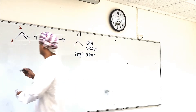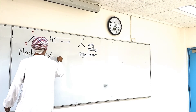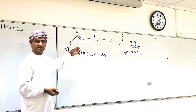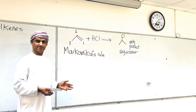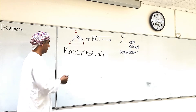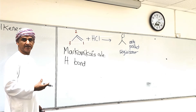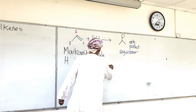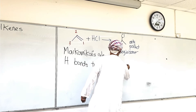Markovnikov's rule states that in the electrophilic addition reactions of alkenes with HX, H of HX bonds to carbon with more hydrogens or less alkyl substituents, and X of HX bonds to carbon with less hydrogens or more alkyl substituents.